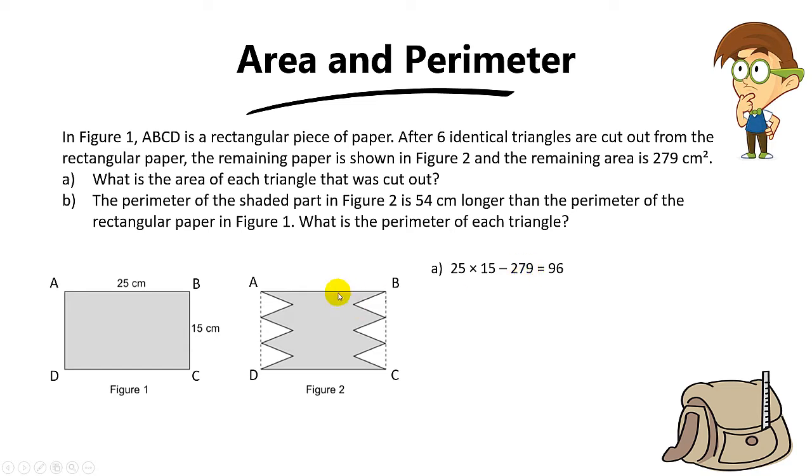Minus away 279, which is the area of the second piece of paper, you will get 96. And this 96 equals the area of the 6 triangles, because 96 is the area of the 6 missing parts. So to find one triangle, you simply take 96 divided by 6, and the answer is 16 cm². Part A should be very straightforward.